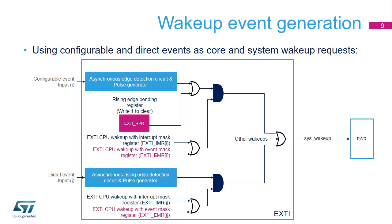The CPU wake-up signals generated by the EXTI block are connected to the PWR block and are used to wake up the system and CPU subsystem bus clocks. Both configurable and direct peripheral events are able to request a wake-up. A wake-up occurs when an asynchronous edge detection circuit has detected an active edge or a flag is set to one in the EXTI_RPR register. Consequently, software is expected to clear the flag in the EXTI_RPR register to disable the wake-up request when the source of the wake-up is a configurable event. For direct events, the flag is located in the peripheral unit.